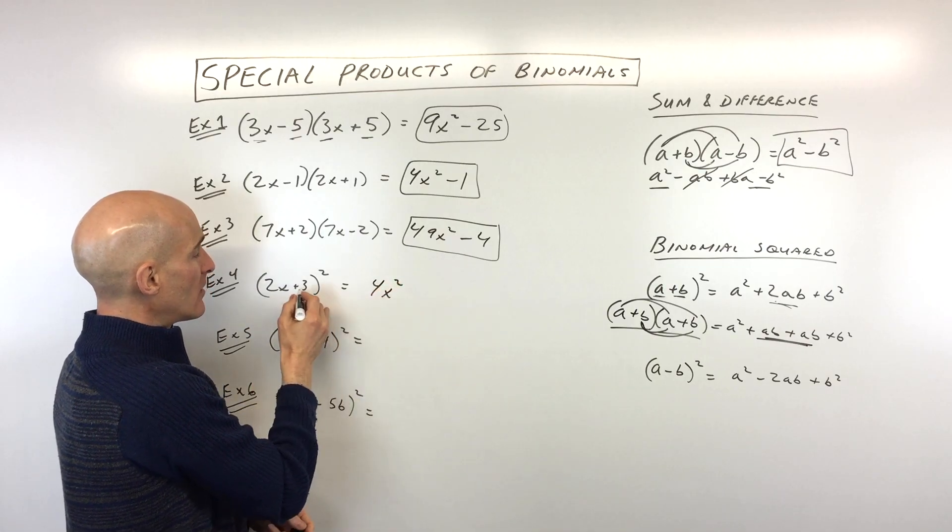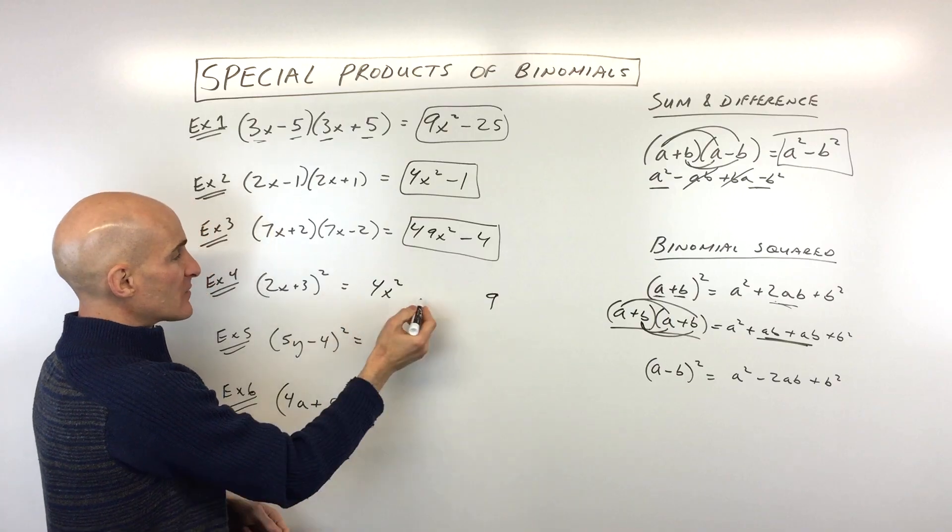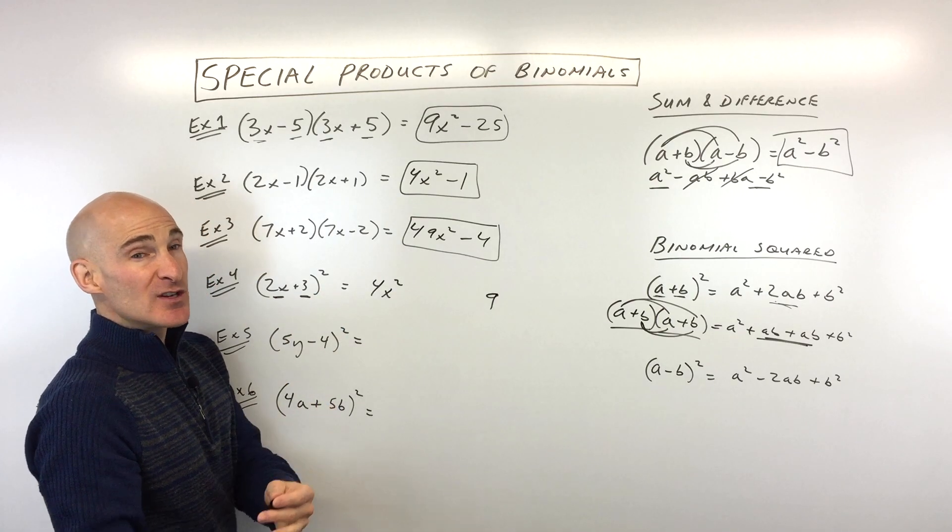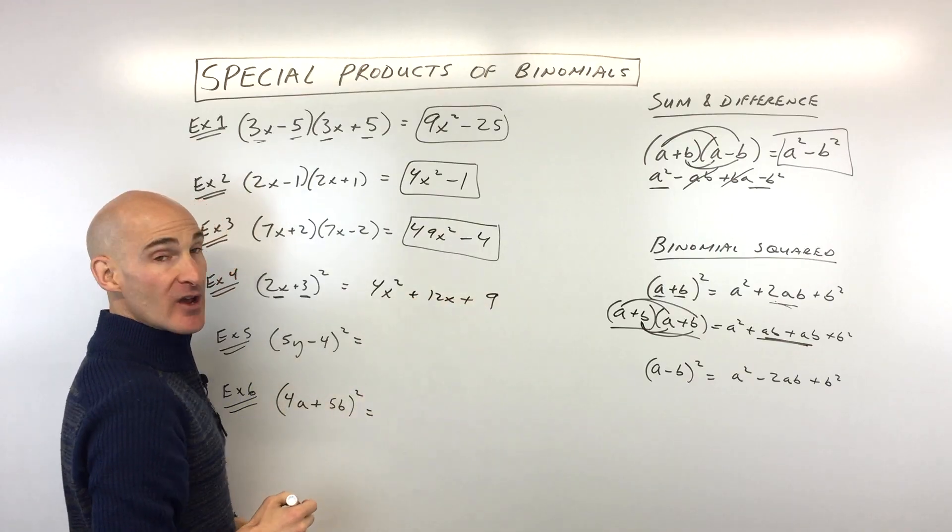which is 4x squared, the last term squared, which is positive 9. But to find the middle term, we multiply 2x times 3, which is 6x, and we double it. That's 12x. And you got it.